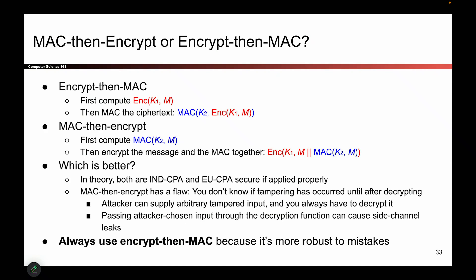We don't like MAC-then-encrypt because it creates a Bob who will decrypt anything you give to him, and only after he decrypts can he detect that something has been tampered with. So in summary, we always prefer encrypt-then-MAC because this doesn't open us up to the same problem. Bob immediately checks the MAC, and if it's wrong, he doesn't do any decryption at all. So we don't have a decryption oracle potentially leaking data. We're always going to suggest encrypt-then-MAC because it's more robust against mistakes — if Bob is leaking information, you'd much prefer the encrypt-then-MAC case, since in MAC-then-encrypt Bob becomes a decryption oracle and leaks information about decryption.